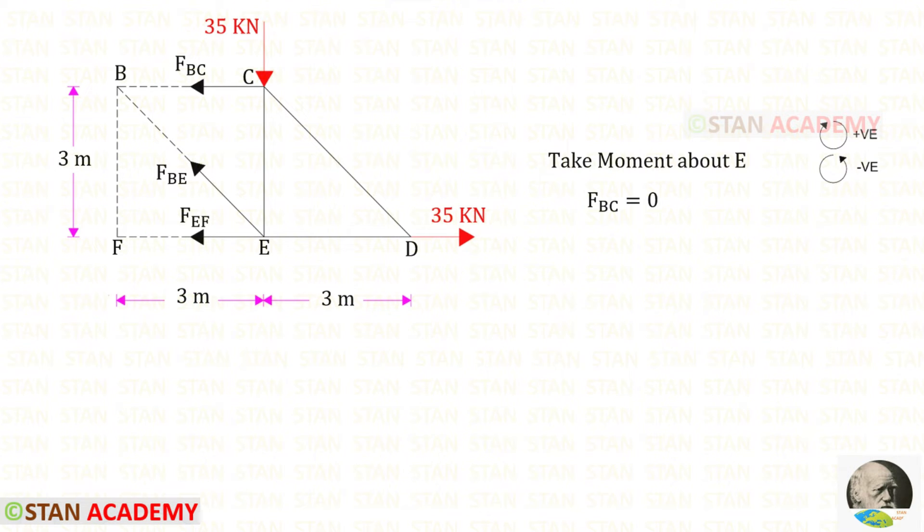We can easily find FBC by taking moment about E because when we take moment about E except FBC we should not consider any of them. We should not consider FBE, FEF, this 35 and this 35. So there is only one force remaining that is FBC. If there is only one force that will be 0, so FBC will be 0.